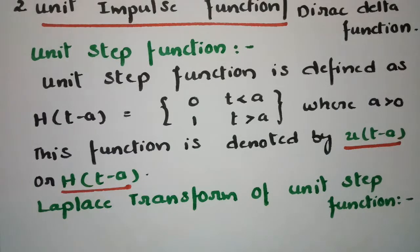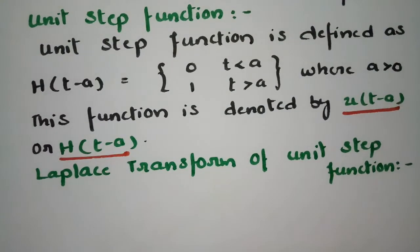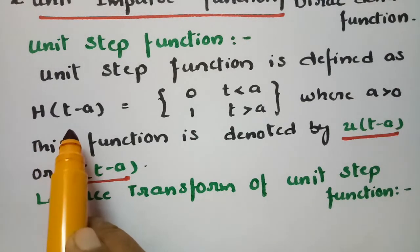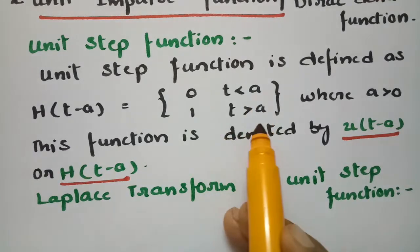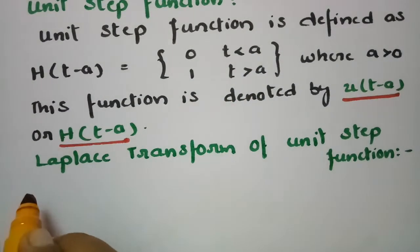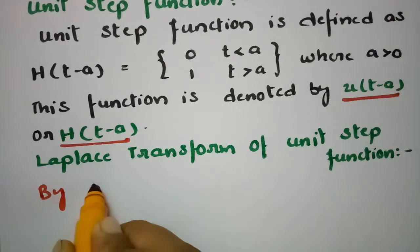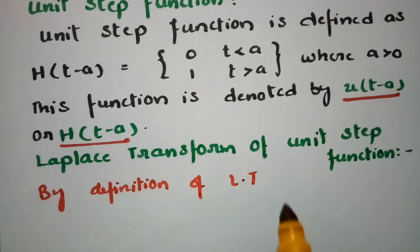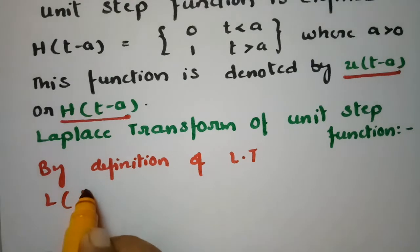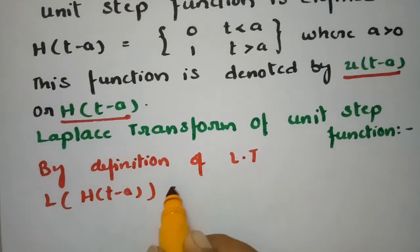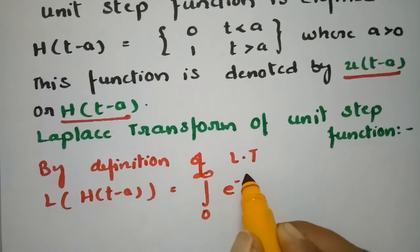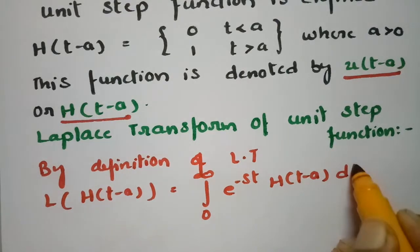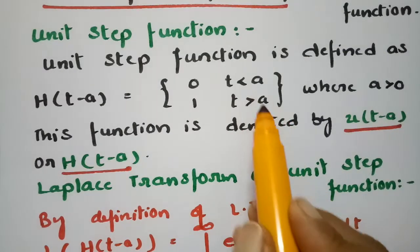We have to apply Laplace transformation to this function. By the definition of Laplace transformation, the Laplace transform of H(T - A) is equal to the integral from 0 to infinity of e^(−ST) · H(T − A) dt. We have to split the limits at A, so this becomes the integral from 0 to A of e^(−ST) · H(T − A) dt plus the integral from A to infinity of e^(−ST) · H(T − A) dt.